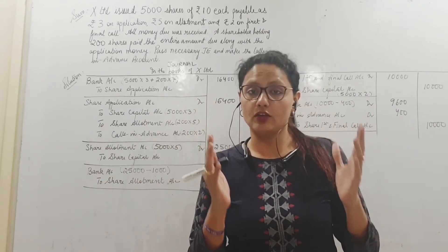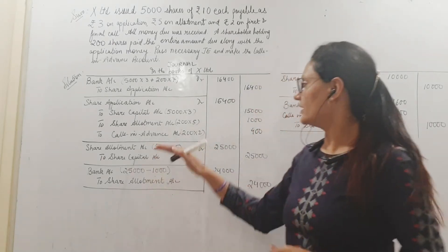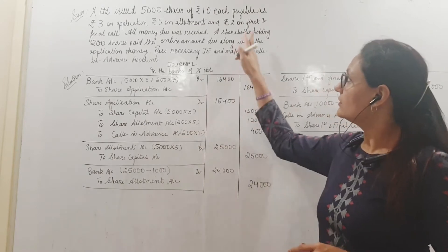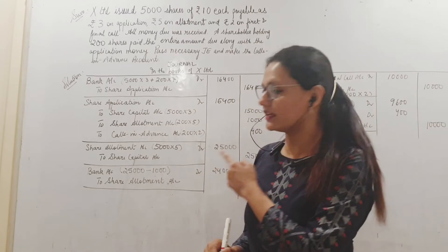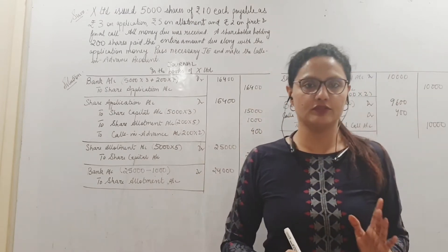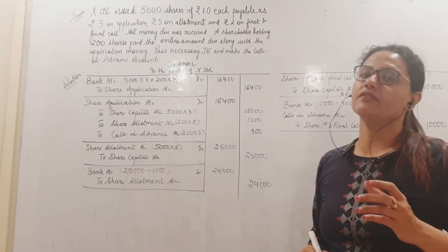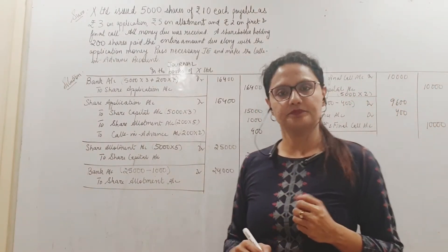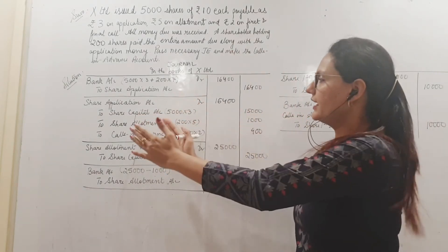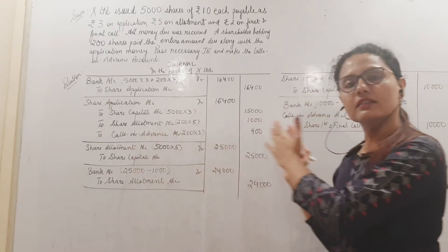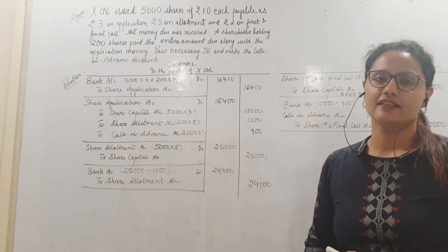We do not open all the accounts right now. All amount beyond allotment will be transferred to calls in advance. So after this 1000 rupees, what remains in advance? Two per share on first call, 400 rupees is still in advance. That I transfer to calls in advance account. So this transfer entry becomes important whenever we have calls in advance. We have received 16,400. 15,000 we took to capital, for allotment we took 1000, and calls in advance we have already received 400.